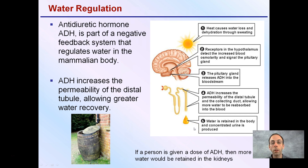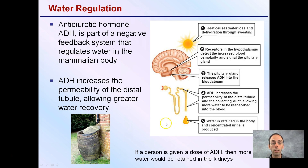Concentrated urine is produced because the body is retaining more water, meaning it is excreting less water, concentrating the urine and giving it more of a yellow to dark yellow appearance.